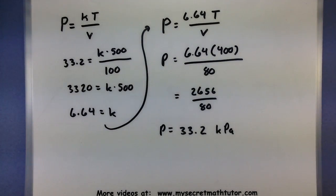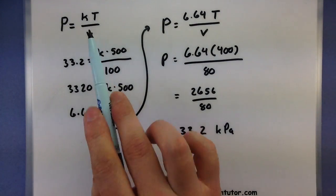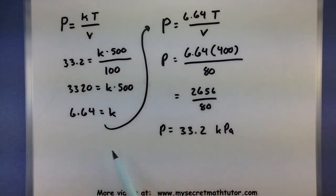But no matter what type of combined variation problem you're going through, make sure the setup is good. And then you'll go through the same steps as you go through any other type of variation problem, solving for your k, and then getting some new information out of it.